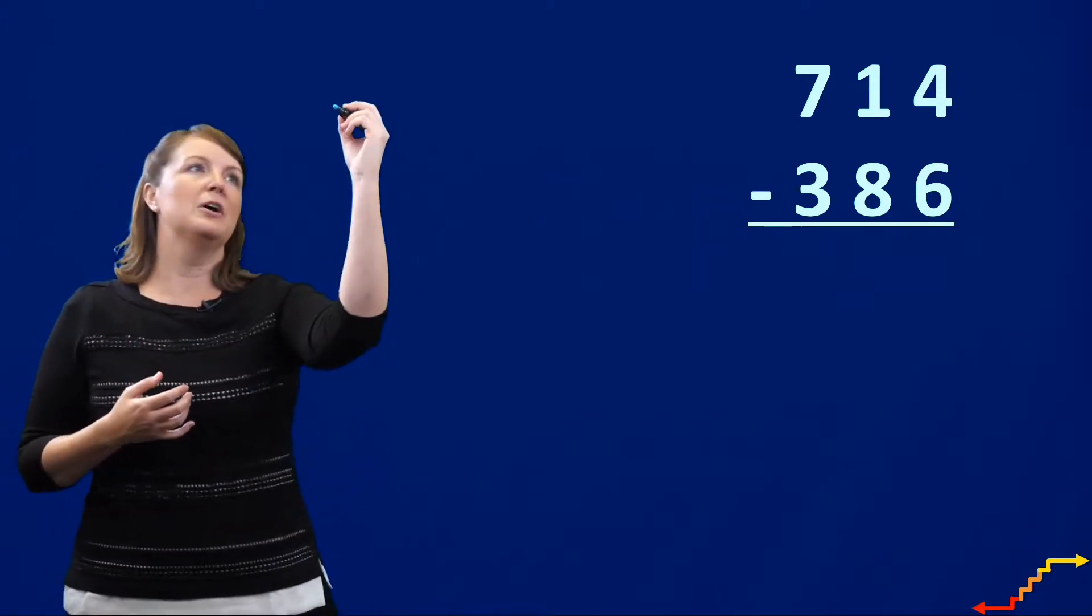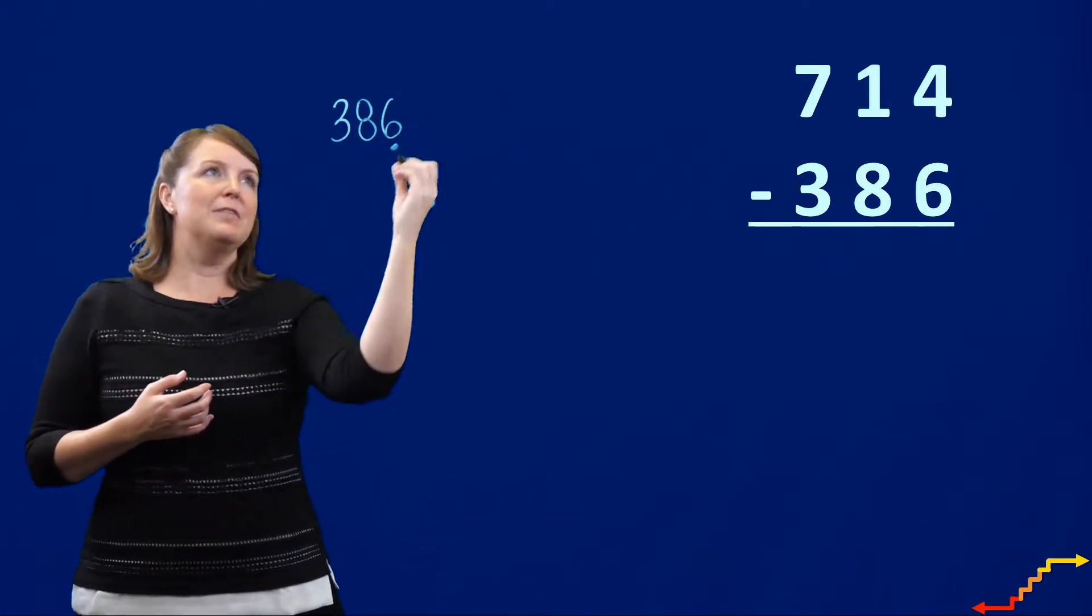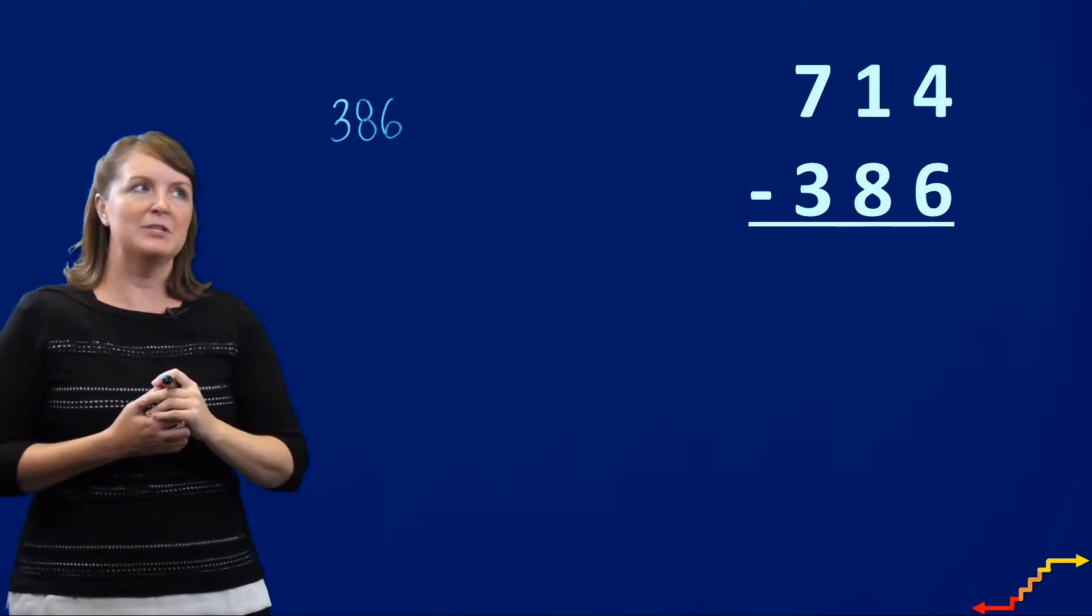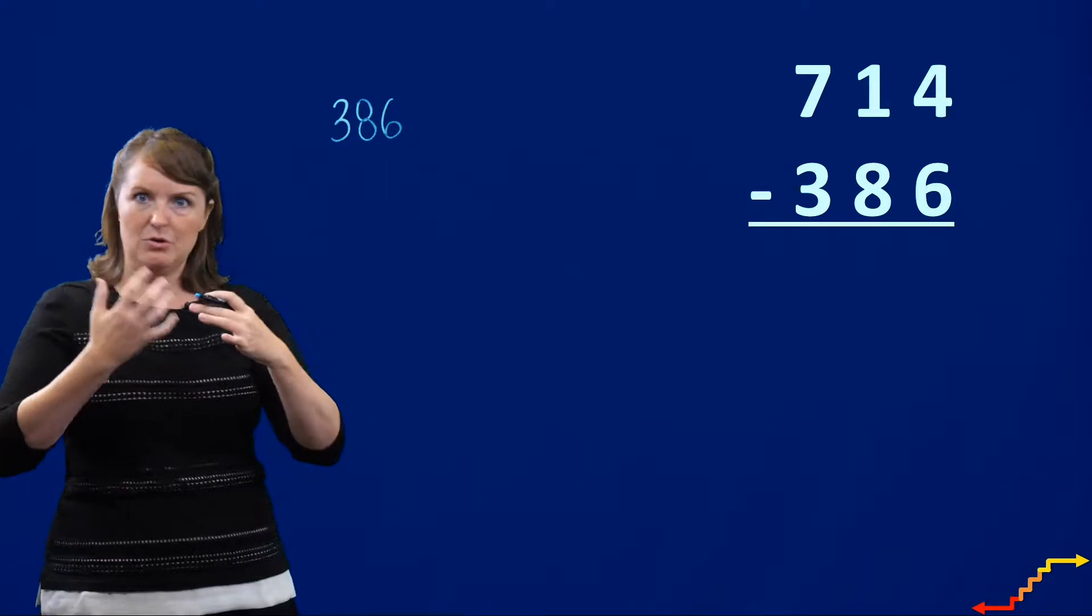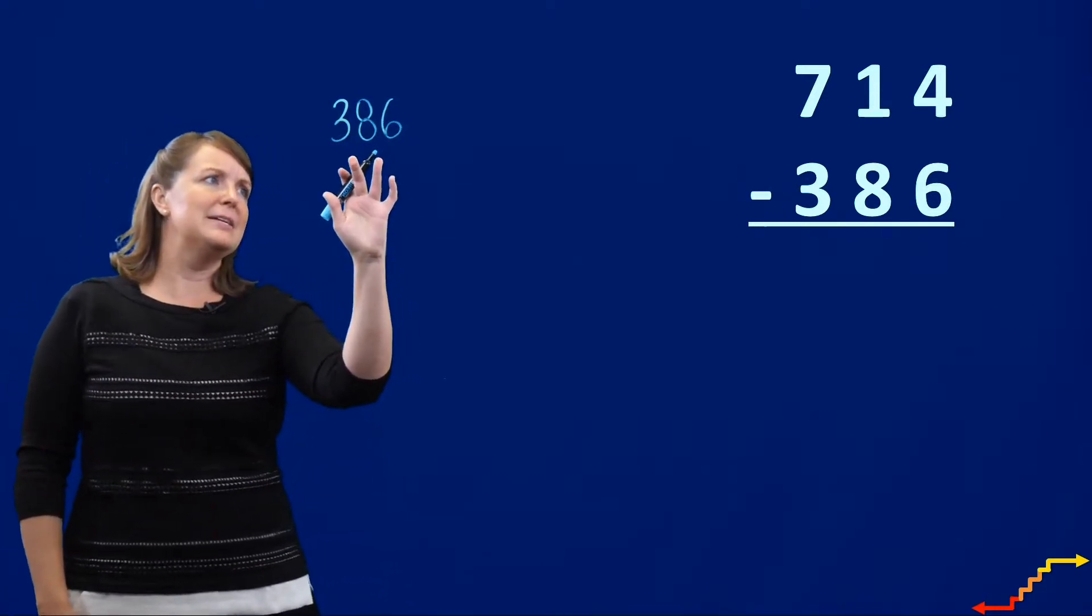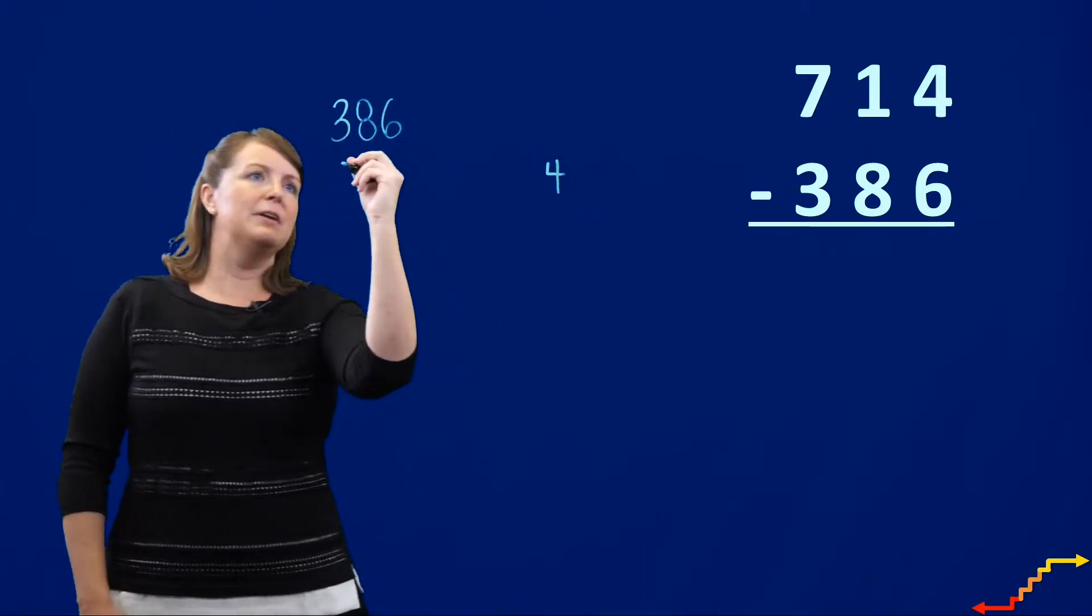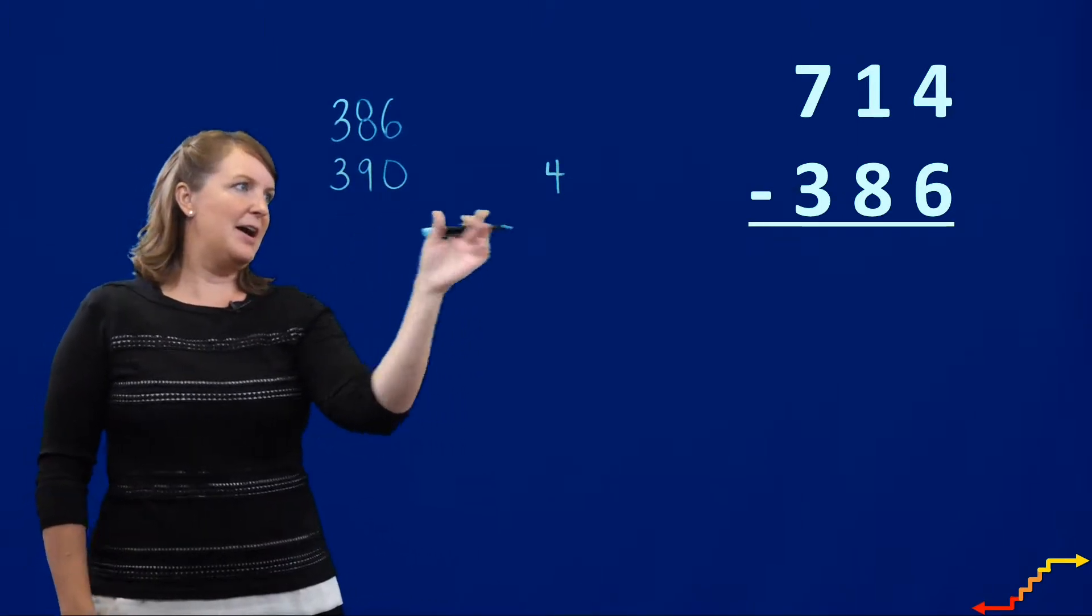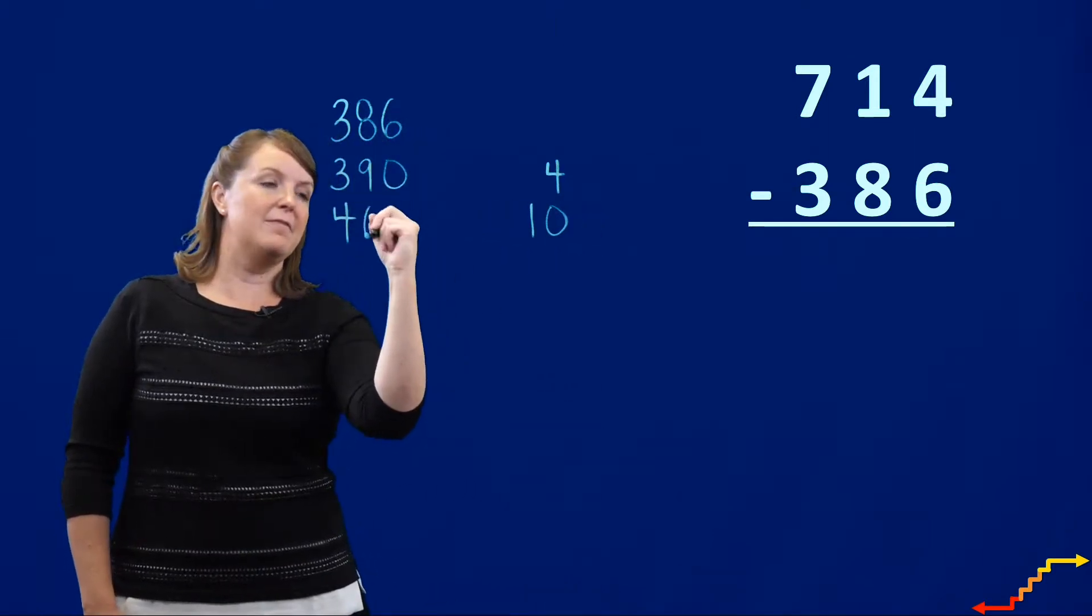So we are going to start with 386. And I'm going to figure out how to count forward or count up to 714. And I'm going to use just friendly numbers to me. So you and your students may do this in a little bit of a different way. So when I think of 386, if I add 4 to 386, I'm now at 390. If I add 10, then now I'm at 400.